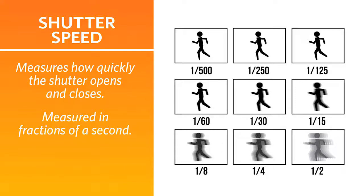A fast shutter speed allows you to stop motion, but it requires a lot of light. A slower shutter speed may introduce motion blur, but it works best in situations where you don't have a lot of light.